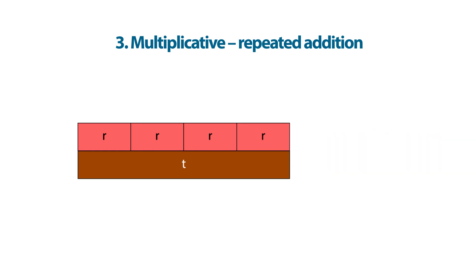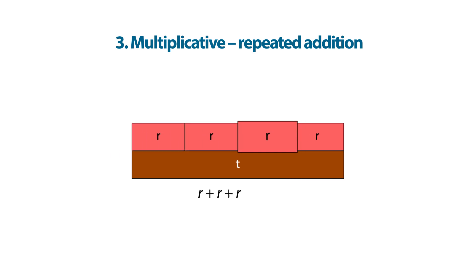For example, we can see this representation as red plus red plus red plus red is equal to tan. Therefore, four times red is equal to tan.